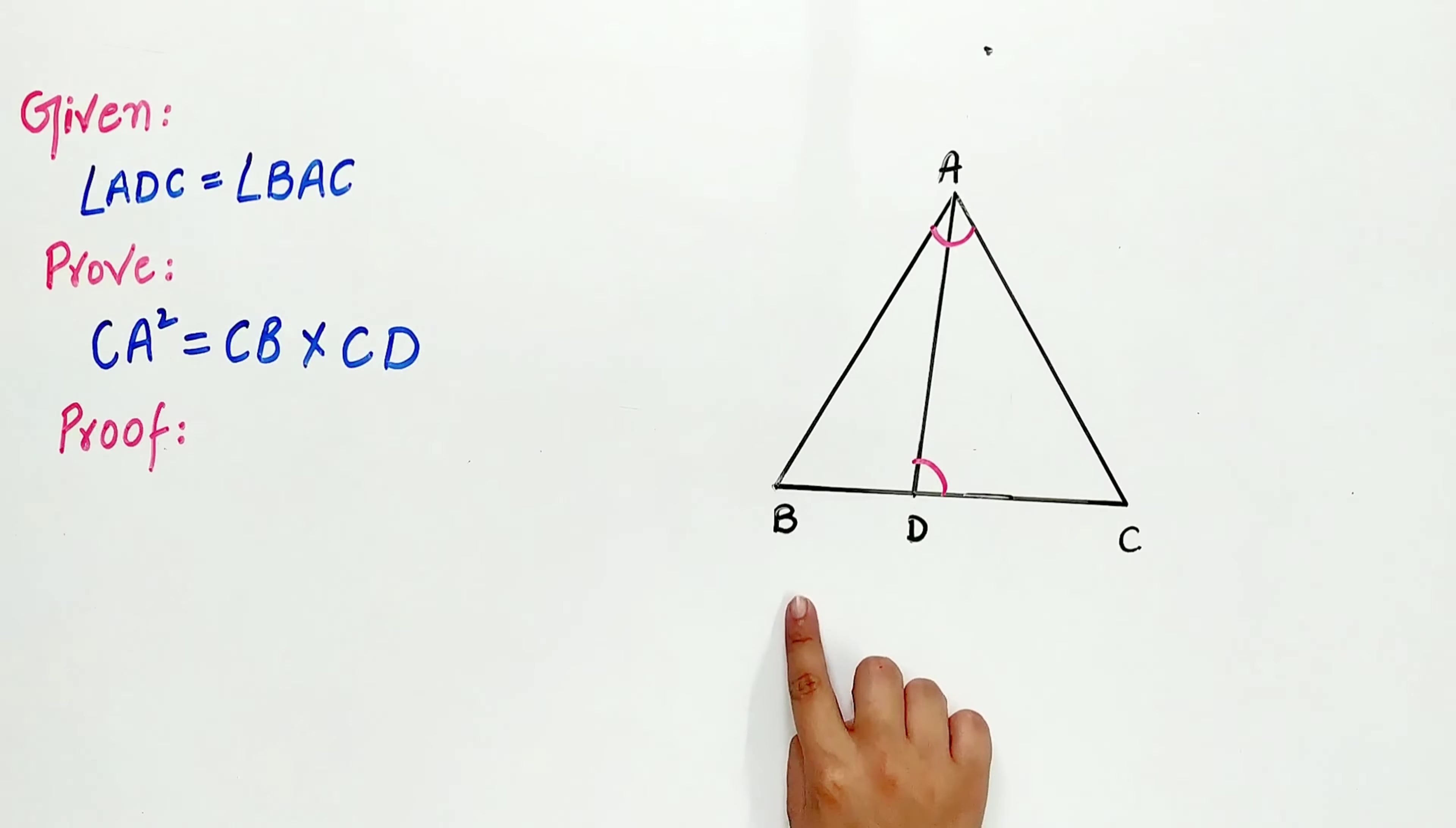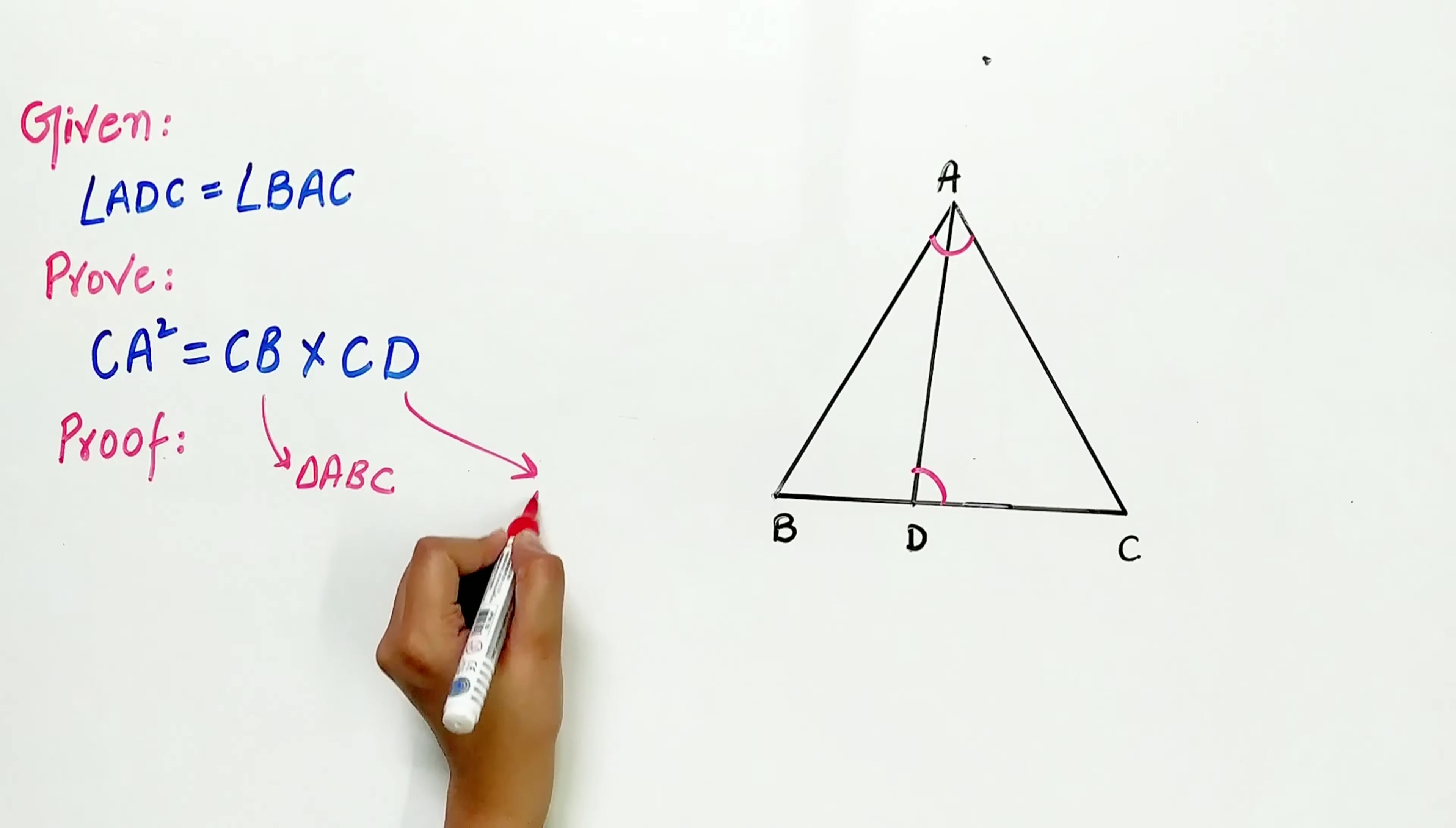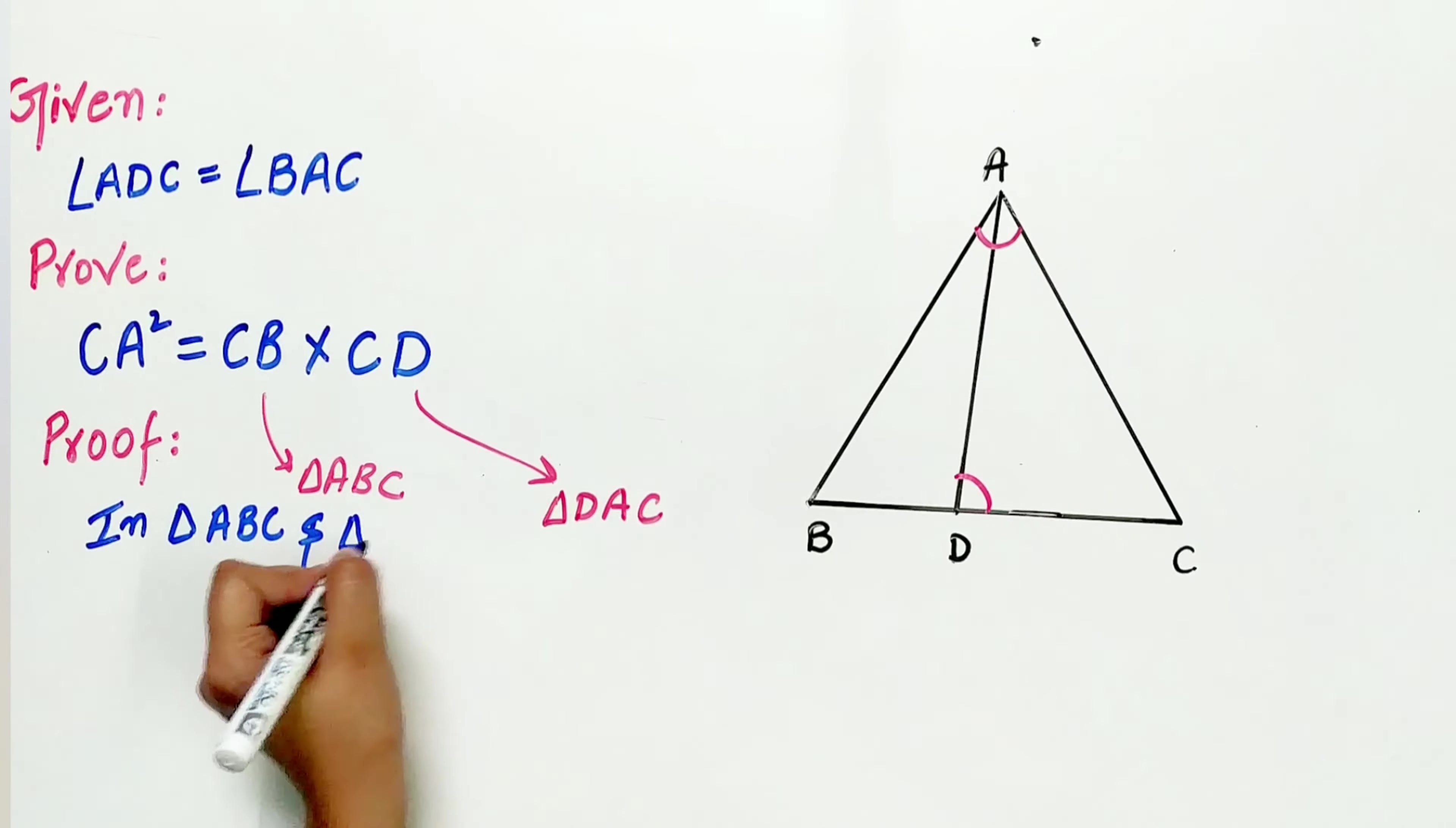CB is the side of the triangle ABC and CD is the side of triangle DAC. So let's take these triangles: triangle ABC and triangle DAC.